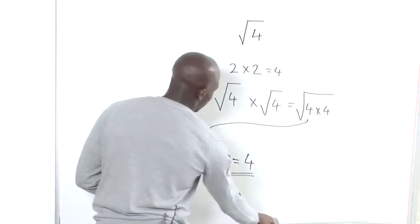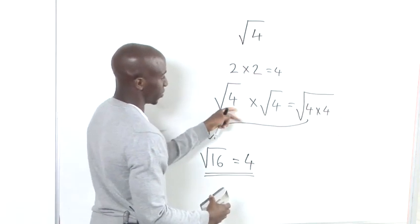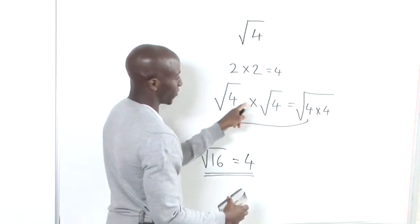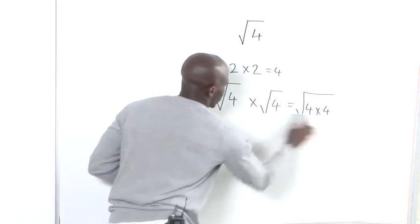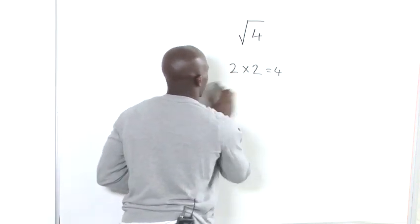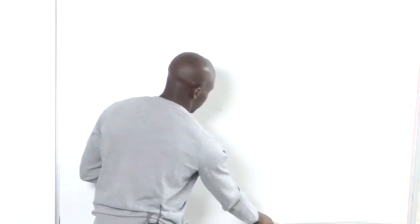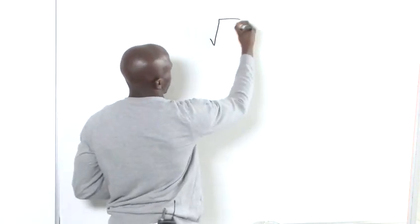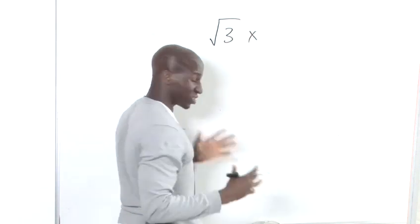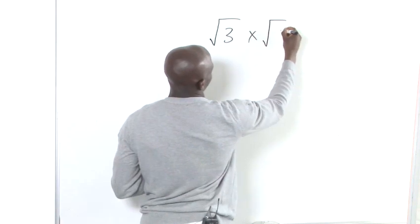Now, just imagine if we wanted to multiply two different numbers. Because in this situation, we took square root of 4 and multiplied it by square root of 4. So, when we have two different numbers now, say for instance, the square root of 5 and the square root of 3, we just have to apply the same procedure. Nothing changes.